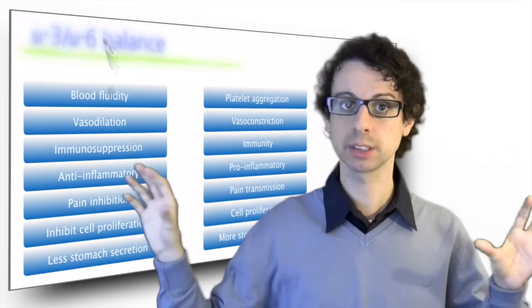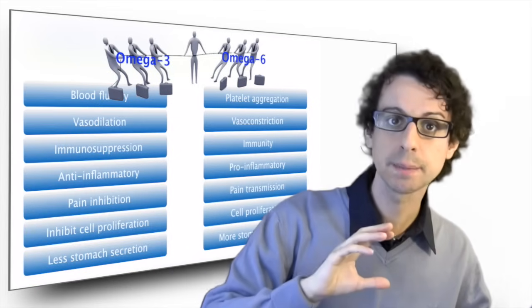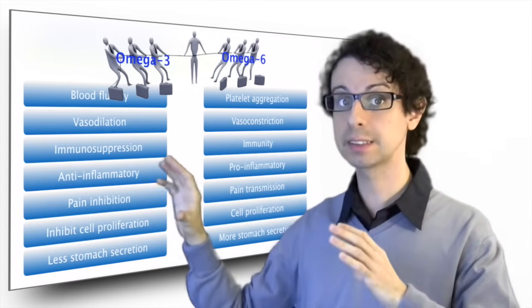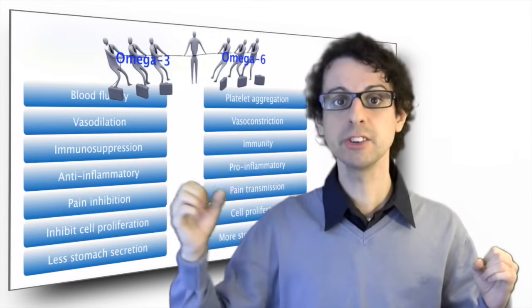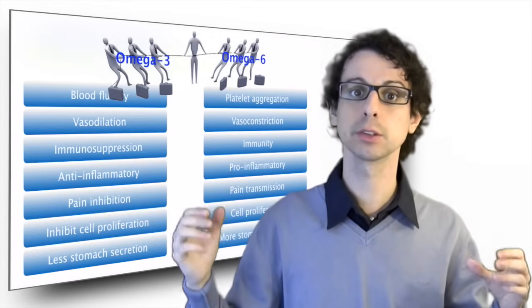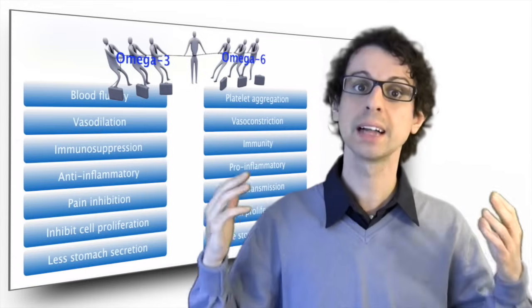The way I picture this is sort of a pulling rope game, with the omega-3 team at one end of the rope and the omega-6 team at the other. The omega-6 team pulls toward inflammation, platelet aggregation, vasoconstriction, pain transmission, and strong immunity.